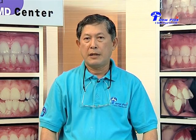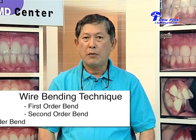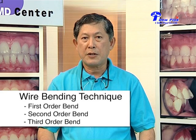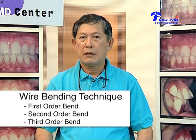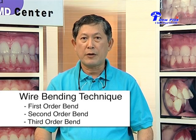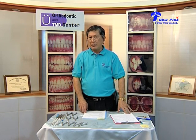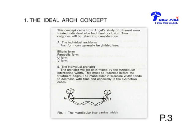We can divide the wire bending technique into three different parts. Number one, we will be dealing with first order bends. Number two will be second order bends, and number three is third order bends. The design of the first order bend is composed of five different characteristics. The ideal arch concept has to be set first — this is the basic foundation for first order bends.